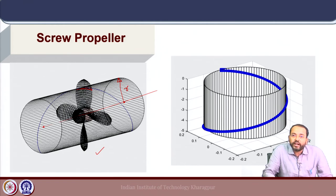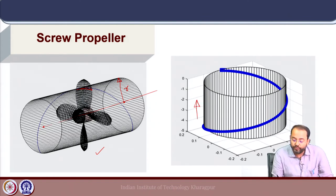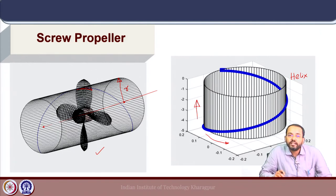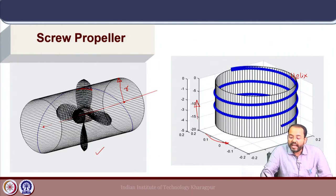If we take a point on a cylinder and it simply moves around the cylinder, the locus is a circle. But if we rotate a point around the cylinder and also move it along the cylinder axis, the path traced is a helix. A point on the propeller surface as it rotates and moves forward will trace a helical path. Visualizing multiple turns shows the helical surface as it moves along the cylinder.